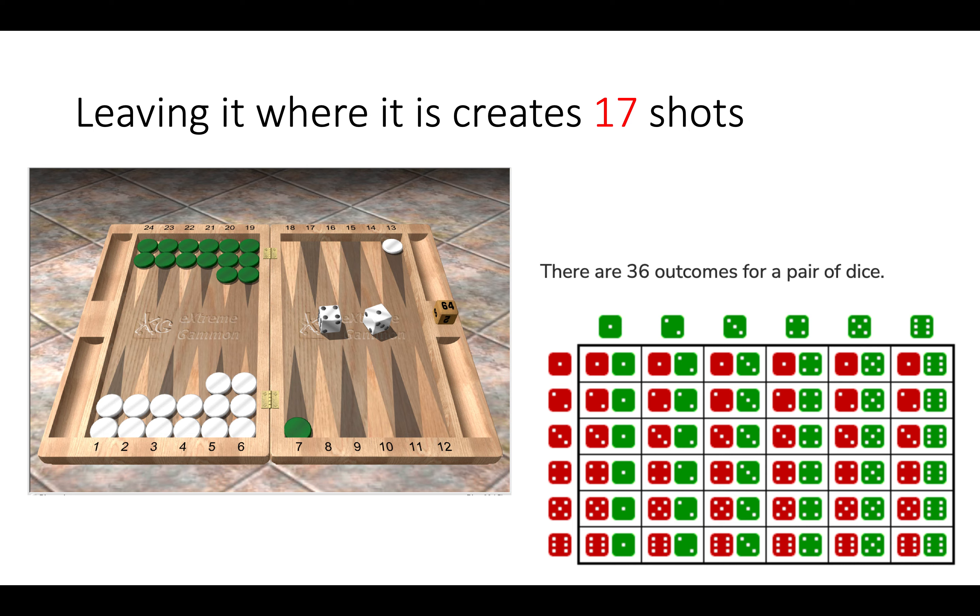So we have any six, which is 11 shots, and we can see the bottom row of the table. But we also have other combinations. So we have five-one which we count twice, we have two-four which we count twice, and we have double-three and we have double-two. So in total that is 11 sixes, two five-ones, two four-twos, and the doubles, so that is 17 shots.